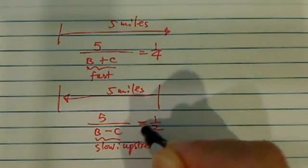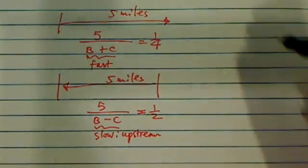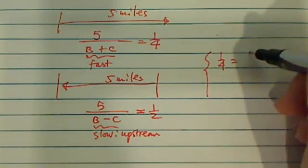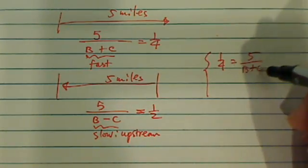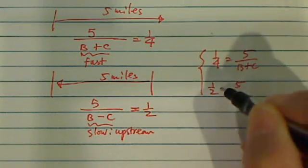This time she took half an hour. We have two equations, two unknowns. So let's write our equations over here. We'll have a quarter equal to five over B plus C. That's one of them. And then we have half equal to five over B minus C.